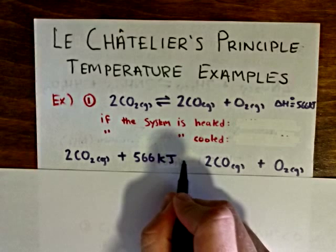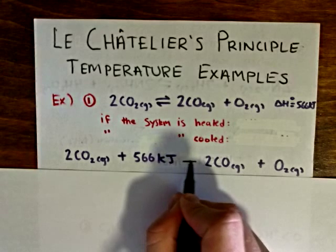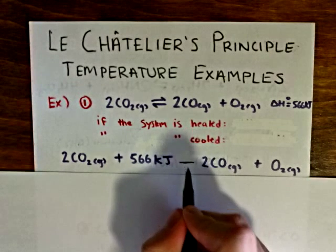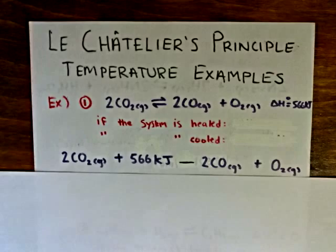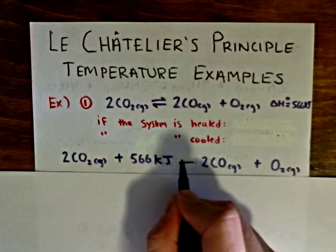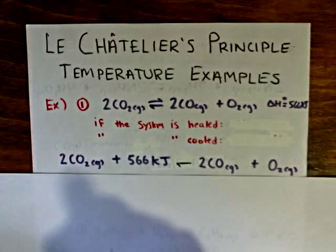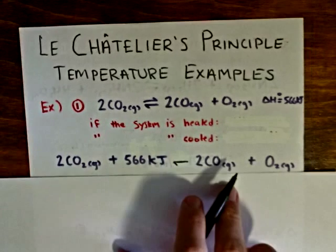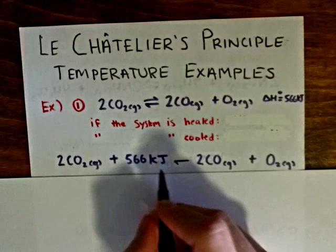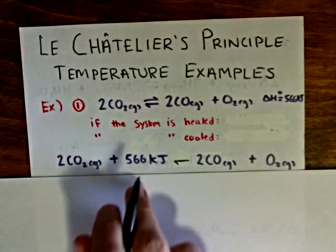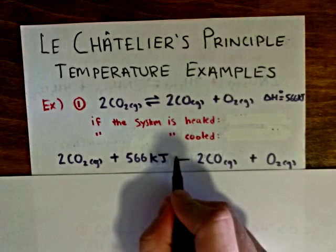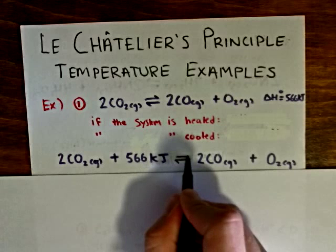We can rewrite this equilibrium as such. Now I write in the equilibrium arrows — I had left them absent. I write the bottom arrow pointing in the direction of the energy term, in this case to the left. And therefore, the top arrow will point to the right.